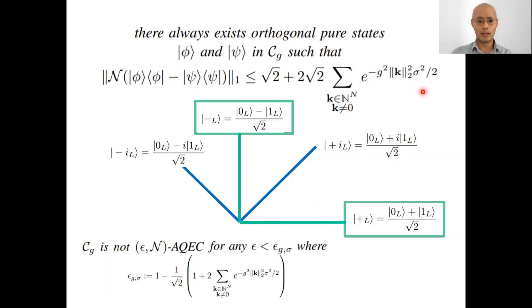All right. So how are we going to ensure that there exists these orthogonal pure states? We're going to pick different orthogonal basis that are not orthogonal to each other. So we can pick the plus minus basis and the i minus i basis. So for example, if the plus minus basis does not satisfy this inequality, then we are guaranteed that the minus i plus i basis will, and conversely. So there always will exist orthogonal pure states that satisfy this inequality.